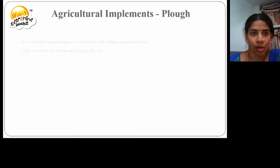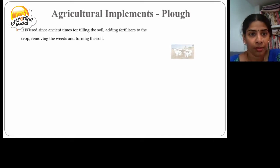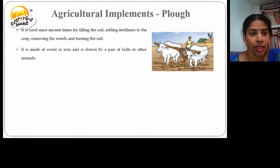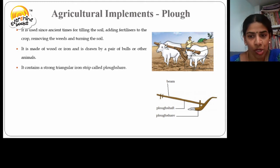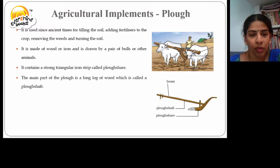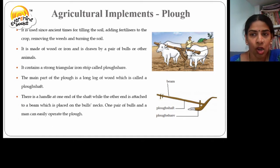Agricultural implements: Plow. The plow has been in use since ancient times for tilling the soil, adding fertilizers to the crop, removing the weeds, and turning the soil. It is made up of wood or iron and is drawn by a pair of bulls or other animals. It contains a strong triangular iron strip. The main part of the plow is a long log of wood called the plow shaft. There is a handle at one end of the shaft while the other end is attached to a beam placed on the bull's neck.